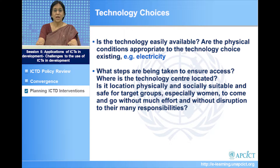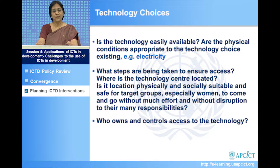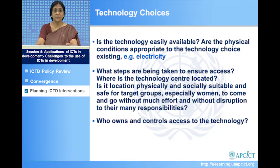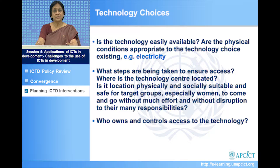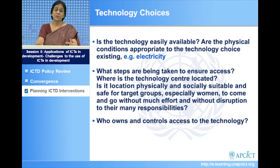Who owns and controls access? If we are going to work with technology, we cannot assume it is costly property that must always be kept under lock and key. The community must own it, take responsibility for its use and safety, to ensure it is not only sustainable but actually used. Technology choices must be based as much on social conditions as on the technology options available. The most recent technology is not necessarily the best — the best is what is most appropriate and easy to use.